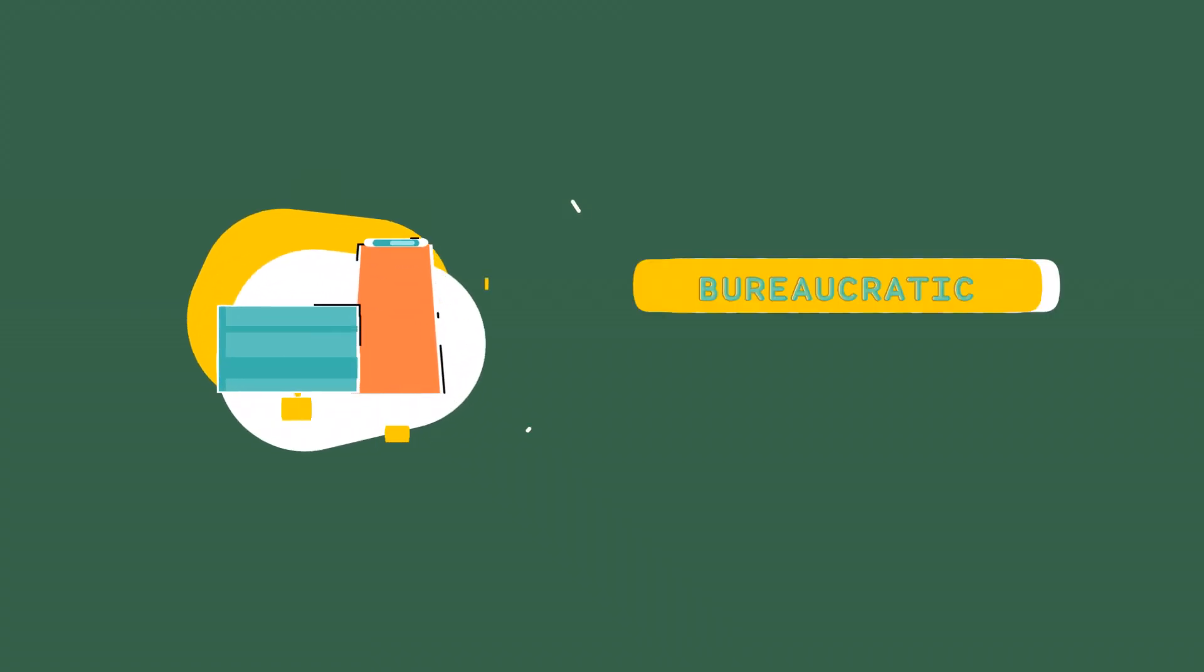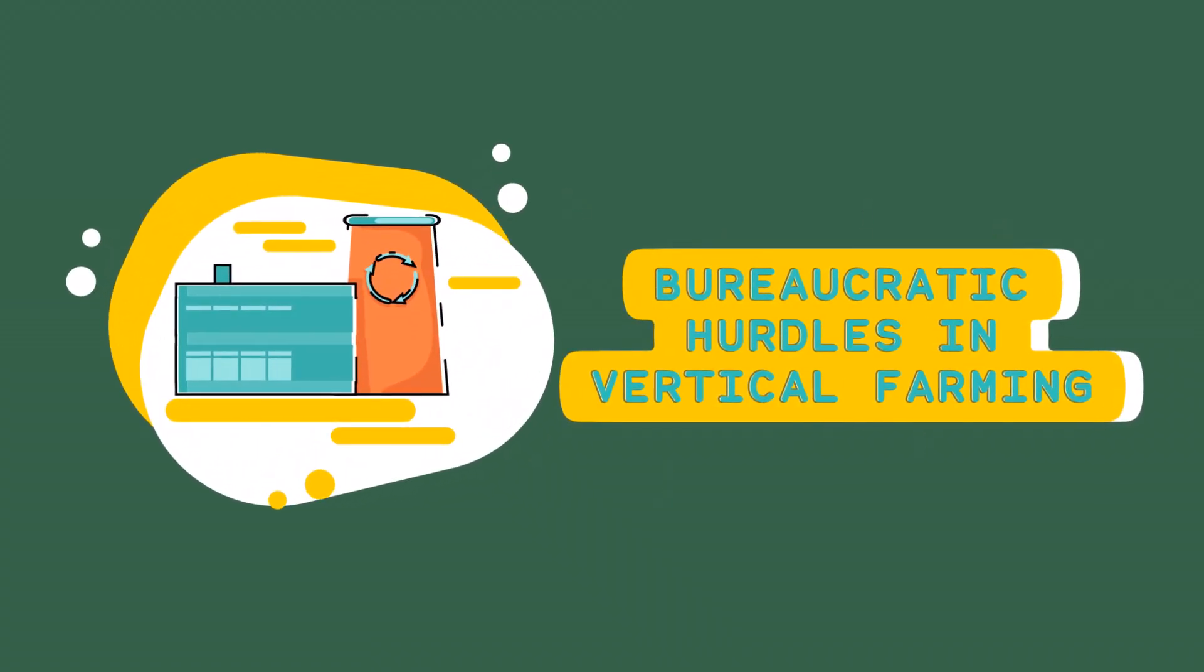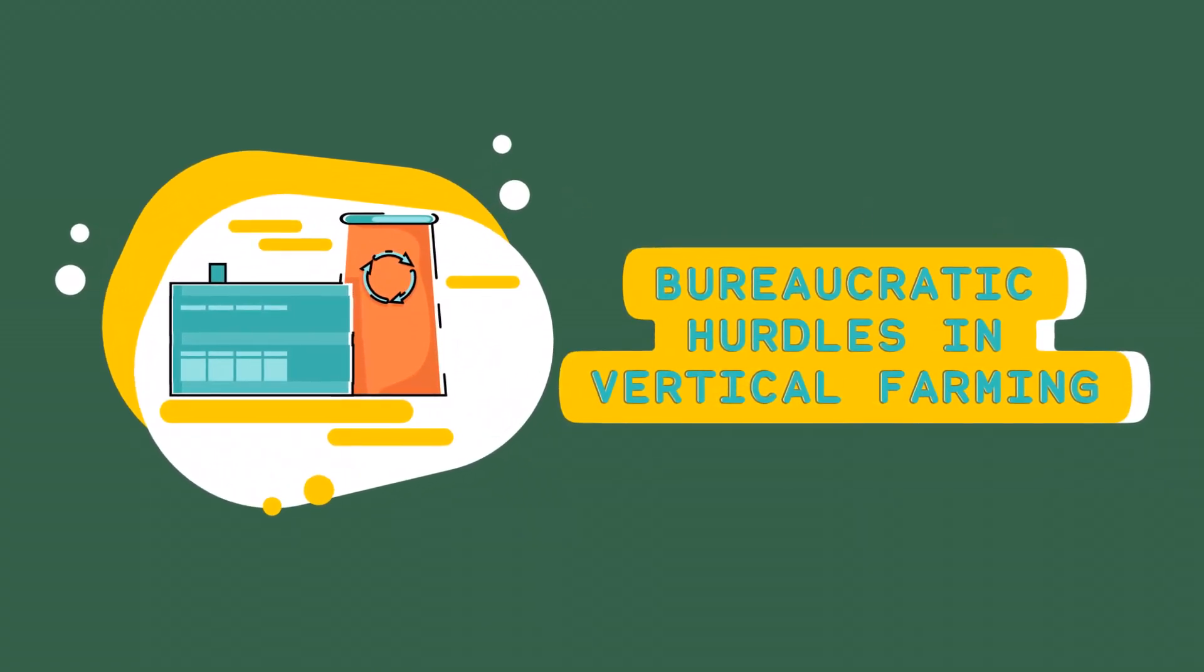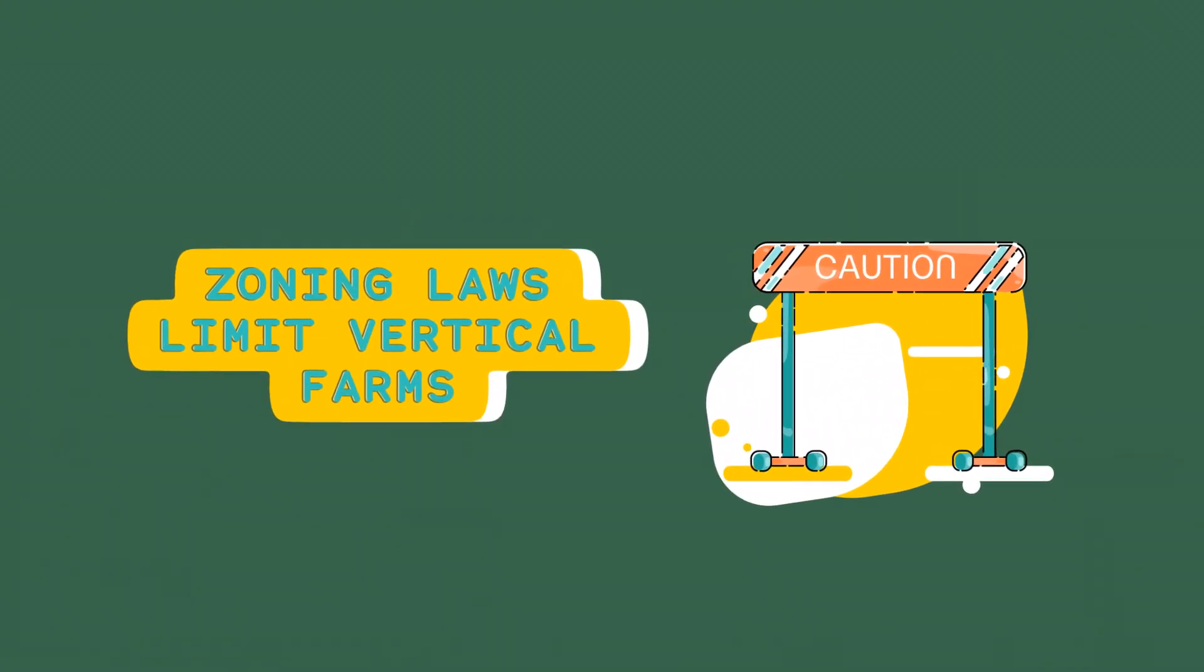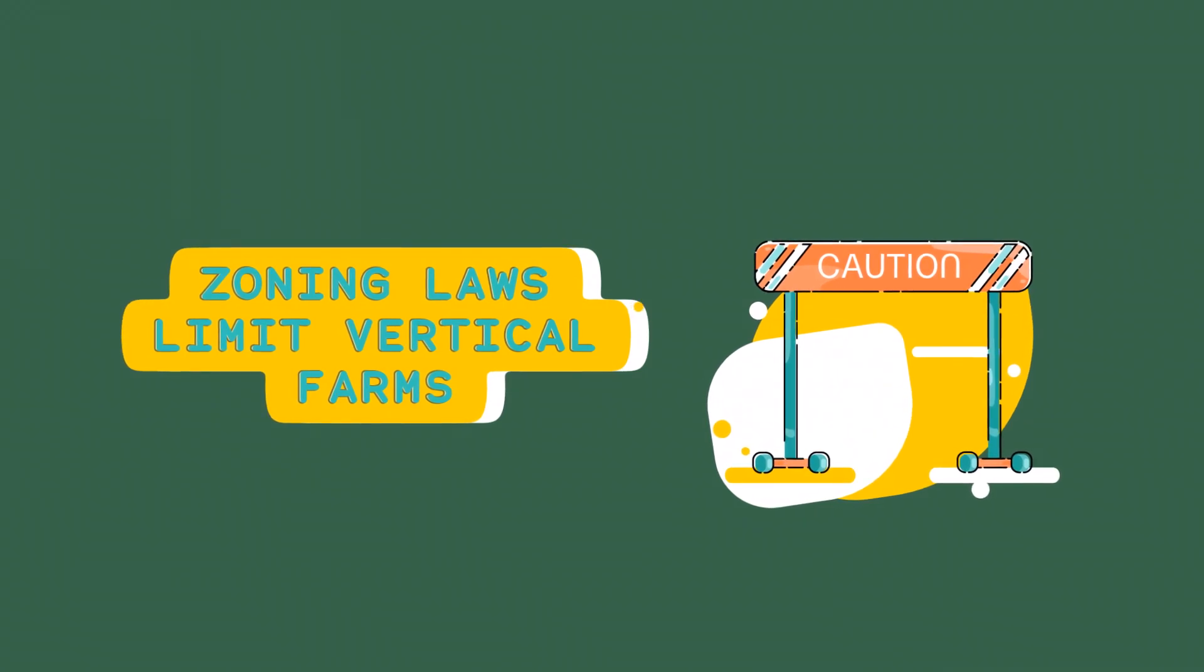Obtaining permits and approvals for vertical farming projects can be a bureaucratic process. Zoning restrictions. Some cities and regions may have zoning regulations that limit the development of vertical farms.